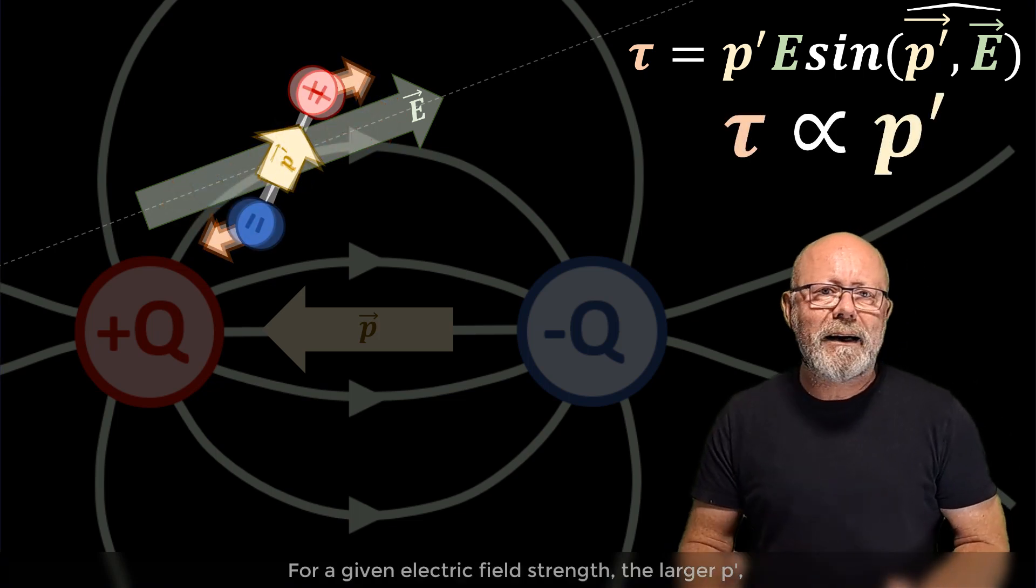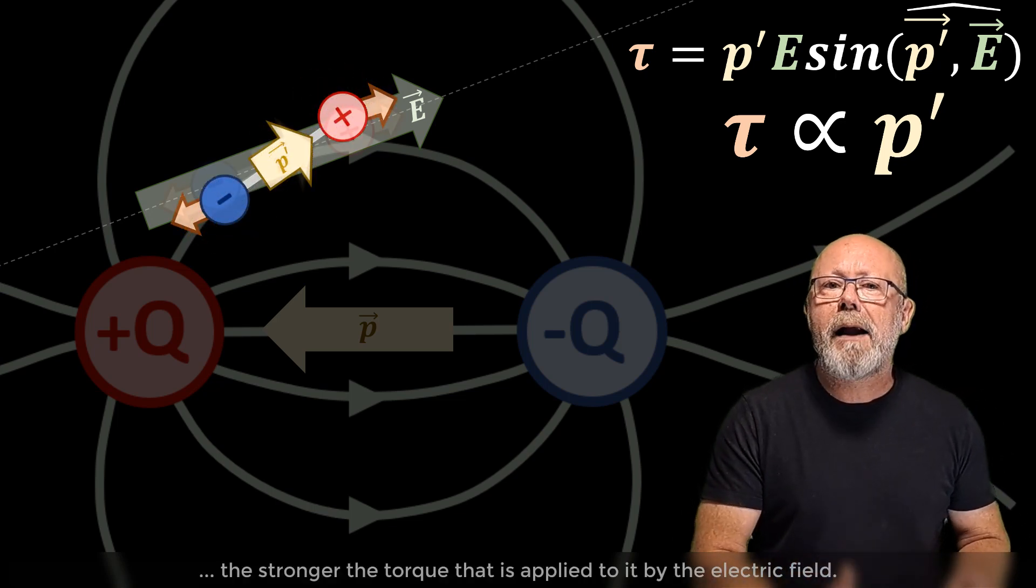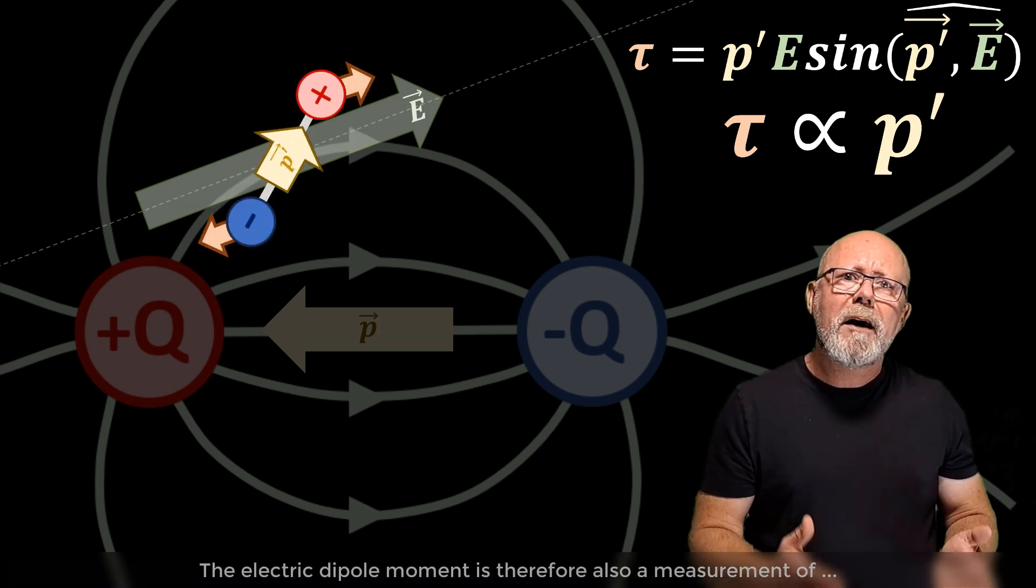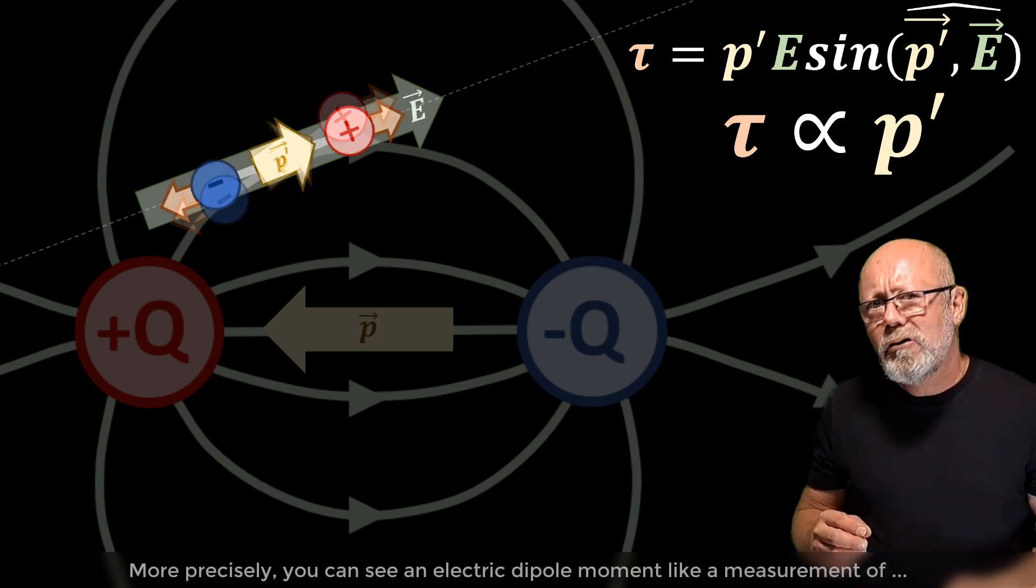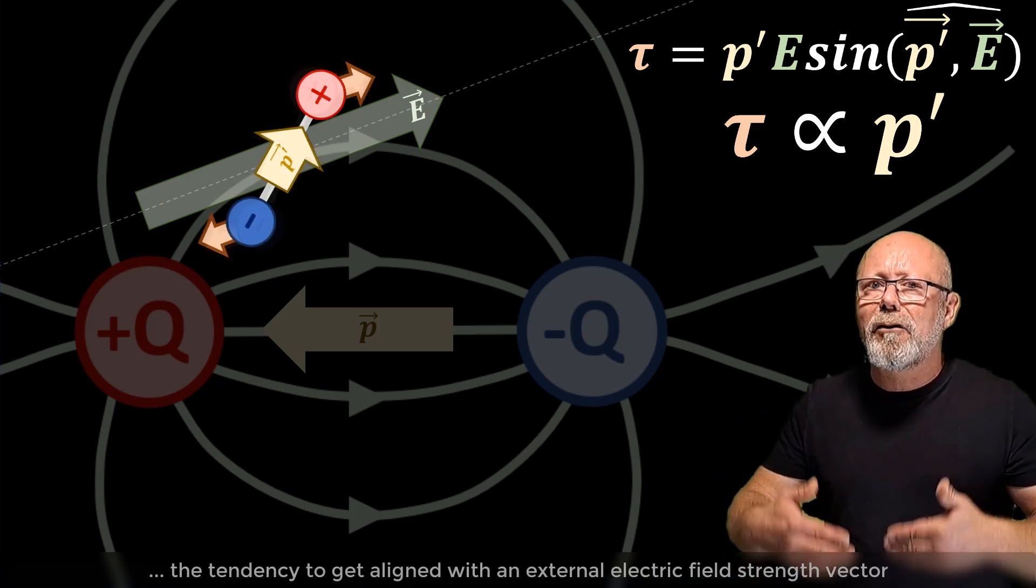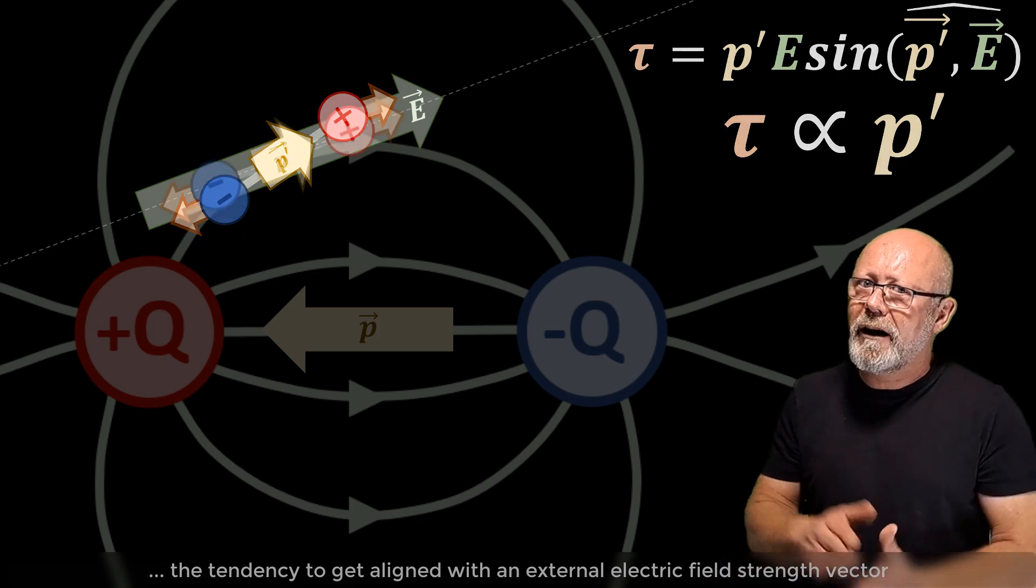For a given electric field strength, the larger p prime, the stronger the torque that is applied to it by the electric field. The electric dipole moment is therefore also a measure of how strongly an external field will act on it. More precisely, you can see an electric dipole moment like a measurement of the strength of the tendency to get aligned with an external electric field strength vector.